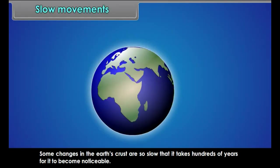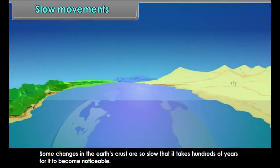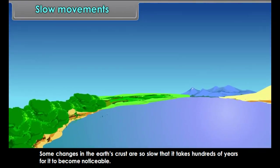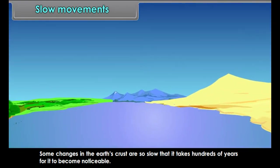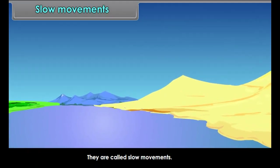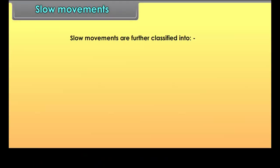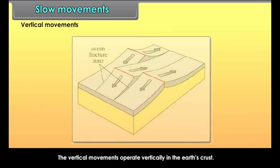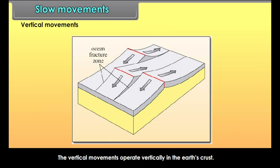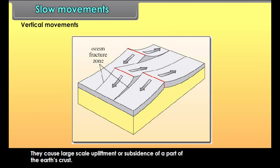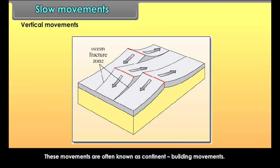Some changes in the earth's crust are so slow that it takes hundreds of years to become noticeable. They are called slow movements. Slow movements are further classified into vertical movements and horizontal movements. The vertical movements operate vertically in the earth's crust, causing large scale upliftment or subsidence of a part of the earth's crust. These movements are often known as continent building movements.